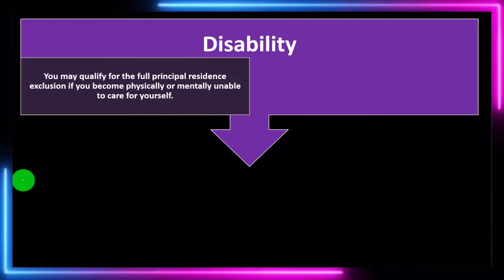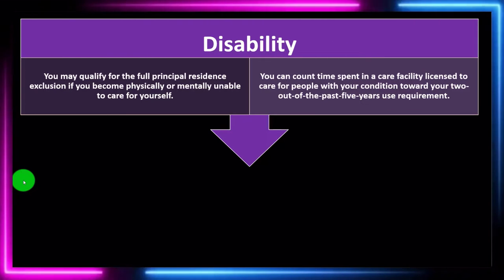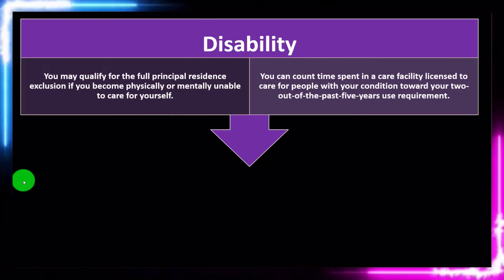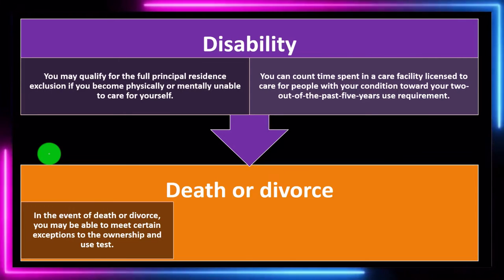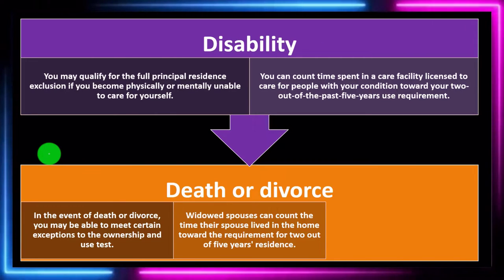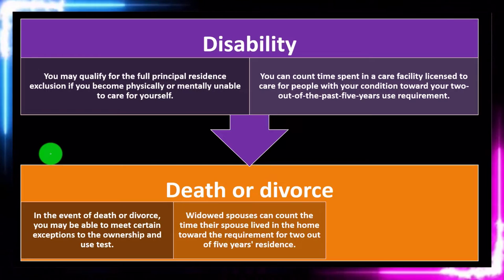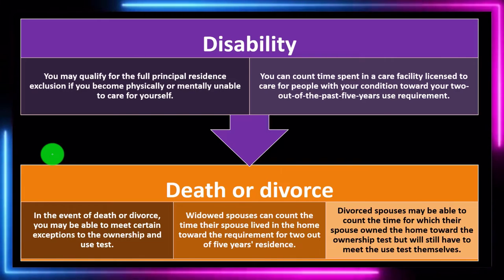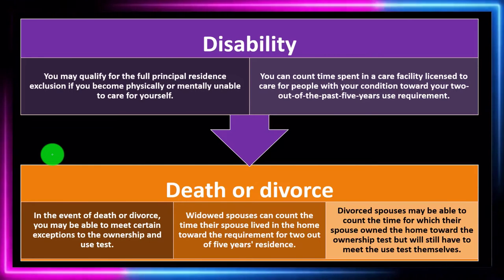Disability: you may qualify for the full principal residence exclusion if you became physically or mentally unable to care for yourself. You can count time spent in a care facility licensed to care for people with your condition toward the two out of the past five years use requirement. Death or divorce: in the event of death or divorce, you may be able to meet certain exceptions to the ownership and use test. Widowed spouses can count the time their spouse lived in the home toward the requirement for two out of five years of residence. Divorced spouses may be able to count the time their spouse owned the home toward the ownership test, but will still have to meet the use test themselves.